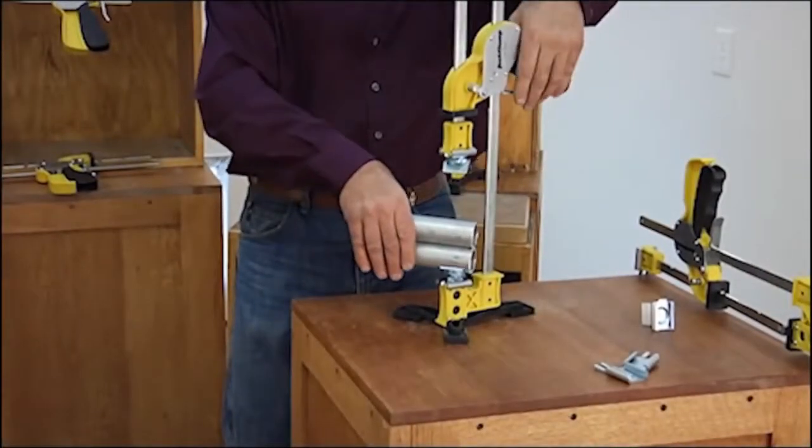You can clamp round stock for drilling or even clamp metal pipe for welding with the jack clamp's V-jaw attachment.